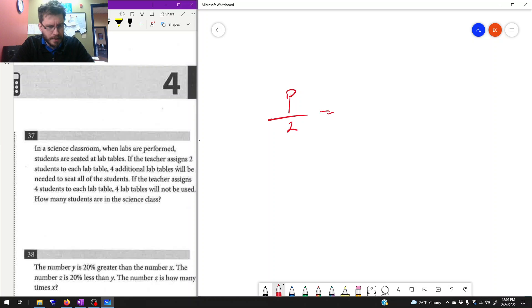Then there will be four additional tables needed. So if I take that value, students divided by two, that's going to be equal to the number of tables in the room plus four. We need four more.